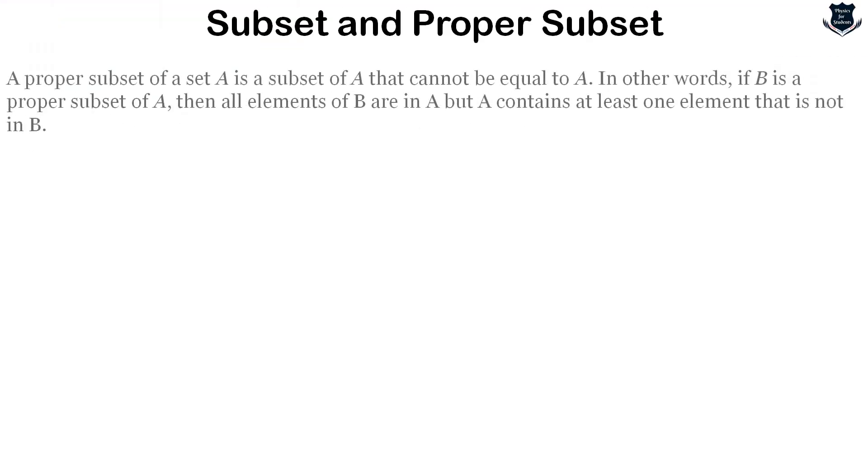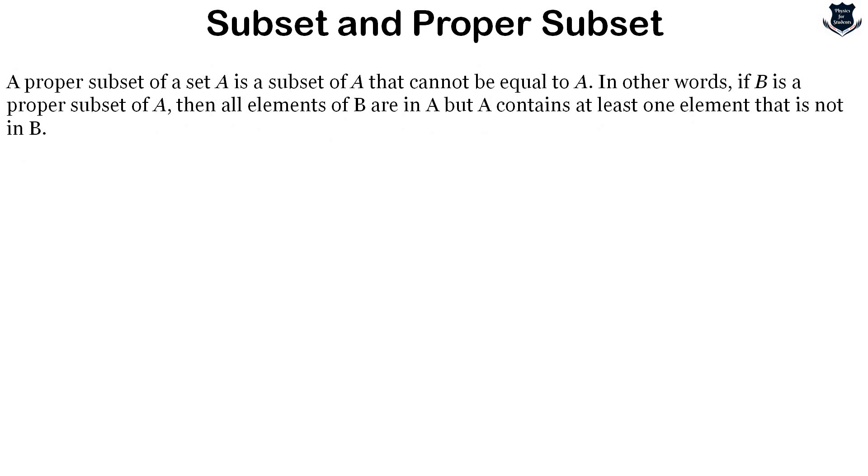First, we'll deal with what is a subset and a proper subset. The first definition shows what is a proper subset. In other words, if B is a proper subset of A, then all elements of B are in A, but A contains at least one element that is not in B.